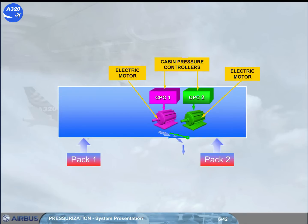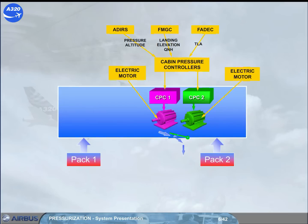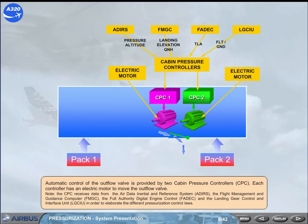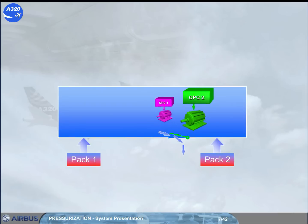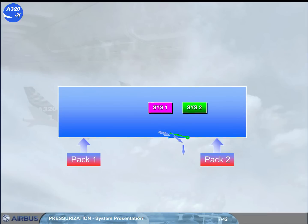Note: the CPC receives data from the Air Data Inertial and Reference System, the Flight Management and Guidance Computer, the Full Authority Digital Engine Control (FADEC), and the Landing Gear Control and Interface Unit, in order to elaborate the different pressurization controllers. A controller-motor combination is known as a system. Only one system will operate at any one time, with the other system acting as backup.